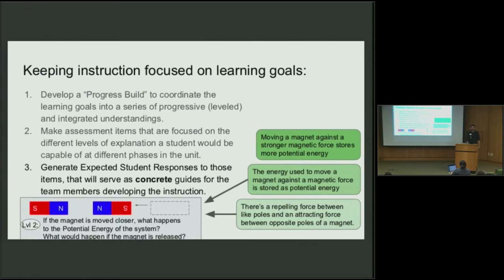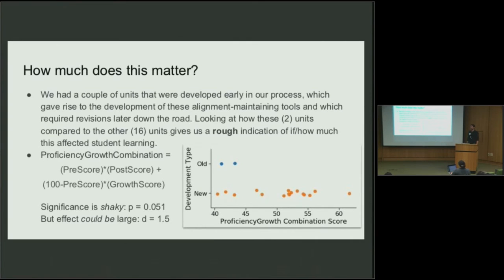In retrospect, that's obvious — but it was not obvious when we had a tight deadline and needed to parallelize things. The second question is: how much does this matter? The short answer is we don't know, but we can make a quick estimate. We have a couple of units where we weren't able to get that structure in place, and we can compare a weighted value of how they perform versus how much students grow over the course of that unit. It's not statistically significant, but it's suggestive and at least consistent with the idea that this matters a lot.